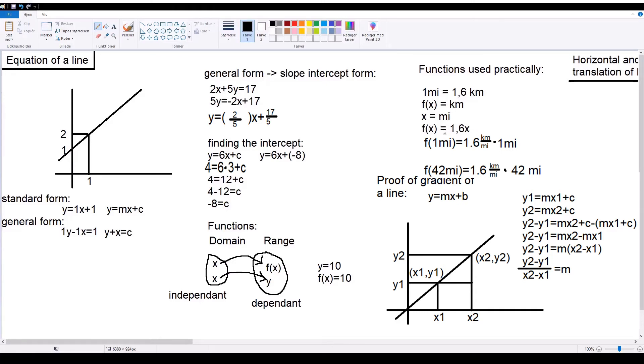Now, if you wanted to calculate how many kilometers one mile is, you simply put one mile as x. So, f of one mile equals 1.6 kilometers per mile times one mile. Or, if you wanted to do it with 42 miles, for example, you simply say f of 42 miles equals 1.6 kilometers per mile times 42 miles.